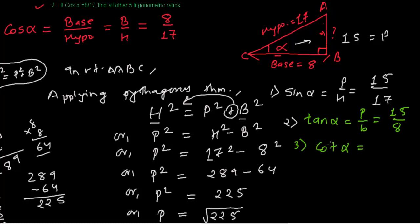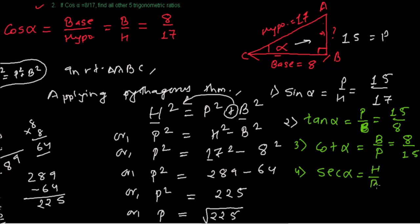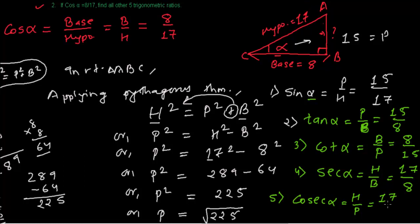Cot alpha is just the opposite of tan alpha, so it is B upon P, which equals 8 upon 15. Sec alpha is the opposite of cos alpha, so it is hypotenuse upon base, which equals 17 upon 8. Cosec alpha is the opposite of sine alpha, so it is H upon P, which equals 17 upon 15.